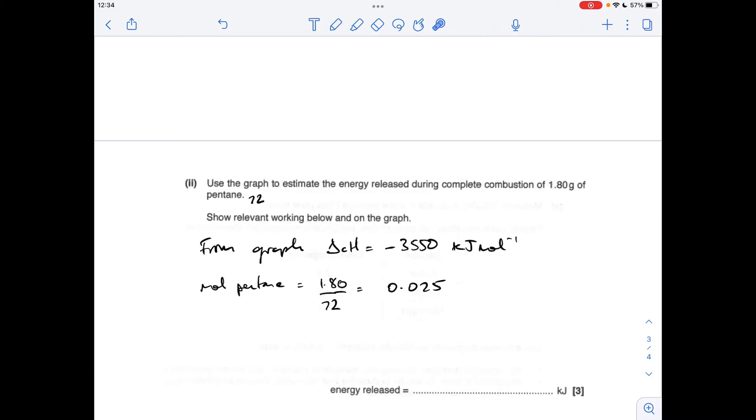So now we've established how many kilojoules per mole of pentane are released. I'm going to find out how many moles of pentane we've got in this 1.8 grams. So mass over MR, 0.025 moles. So the energy released by the 1.8 grams of pentane is going to be the kilojoules per mole value multiplied by the moles we've got. And that's coming out at 88.8 kilojoules.